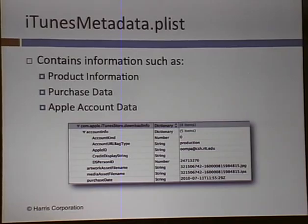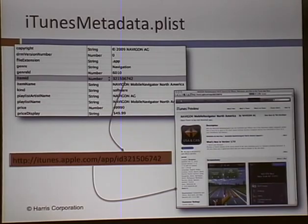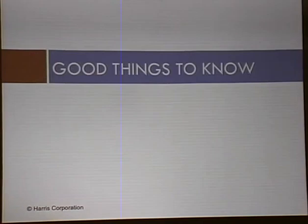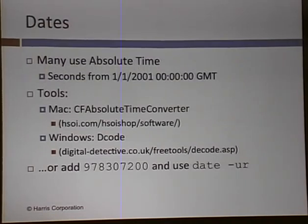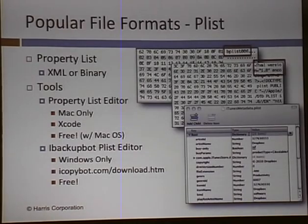The iTunes metadata plist in each app directory contains a lot of the purchase information, product information, version, Apple account data, and item ID. You can use this item ID in a URL on iTunes.apple.com to find out more information about it. One thing good to know: a different epoch time is used frequently — they tend to use January 1st, 2001 instead of January 1st, 1970. It's called absolute time, so you have to translate that differently.